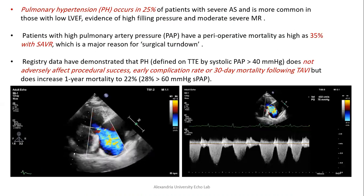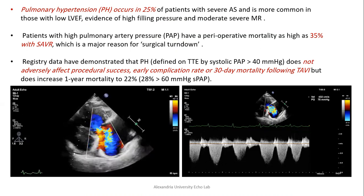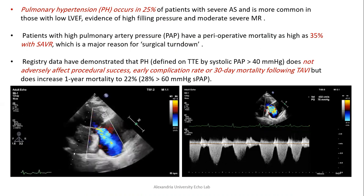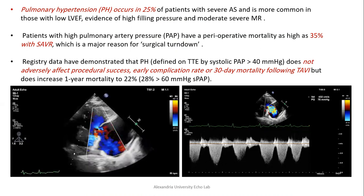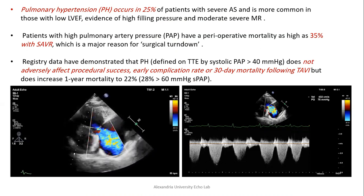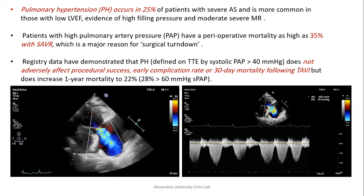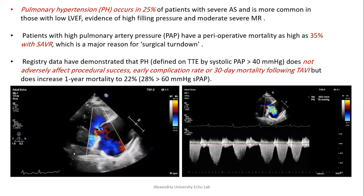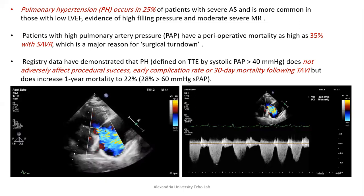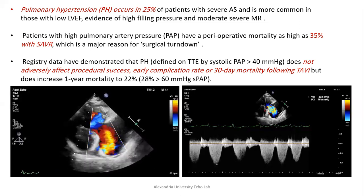Do not forget to look for pulmonary hypertension, found in nearly 25% of patients with severe aortic valve stenosis — more common in patients with low ejection fraction, high filling pressures, or moderate to severe mitral regurgitation. High pulmonary artery pressures are associated with high perioperative mortality reaching 35% in patients referred for SAVR, a major reason for surgical turndown. However, pulmonary hypertension above 40 mmHg does not affect procedural success or 30-day mortality following TAVR, though it increases one-year mortality to 20%.